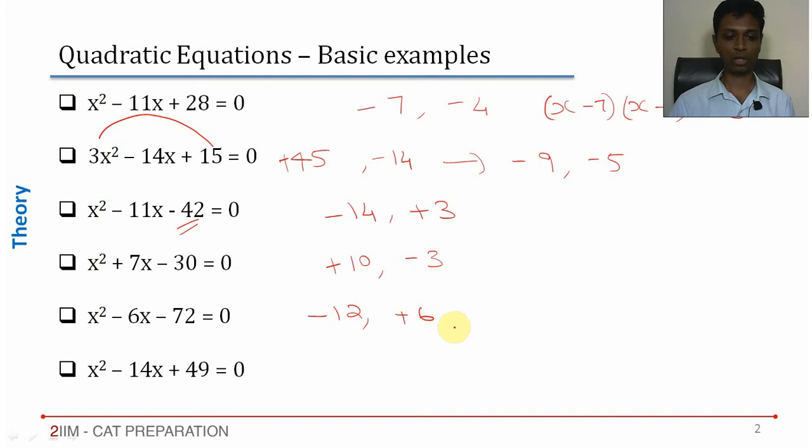x² - 14x + 49 = 0. Product is positive. Both terms should be negative: -7, -7. This is nothing but (x - 7)². Splitting the middle term is a very important skill set. Make sure you have plenty of practice for that.